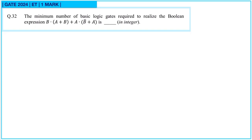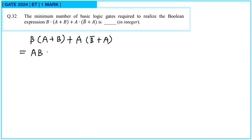Next question: the minimum number of basic logic gates required to realize the Boolean expression. The expression given is B(A or B) or A(B bar or A). Let us simplify it. This will be AB or BB, which is simply B, plus AB bar and AA which is A.